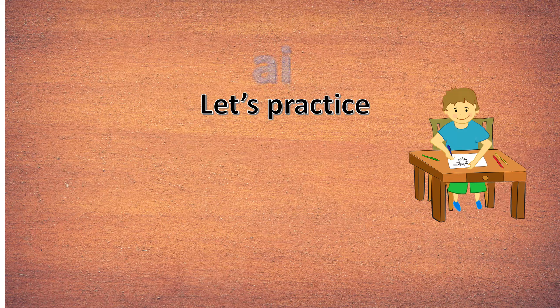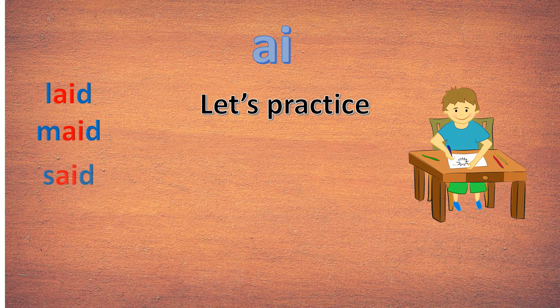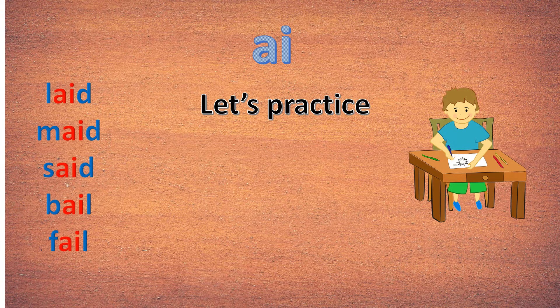Let's practice. A-I — A. So children, if you have noticed, I read all those red color letters as one, that is A. A-I — A. So you have to practice like that.